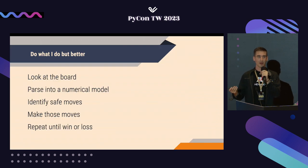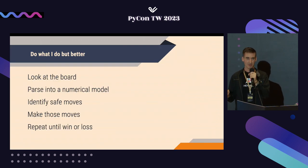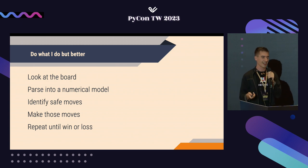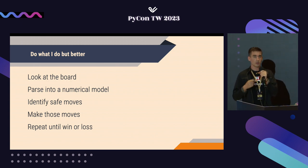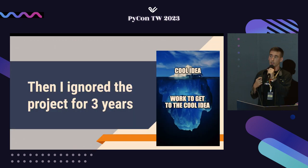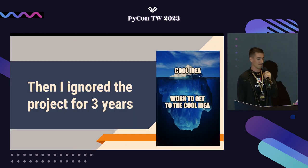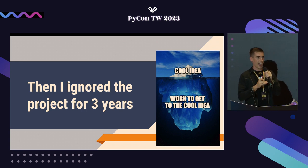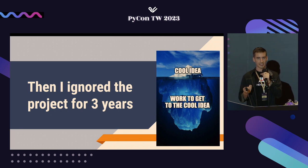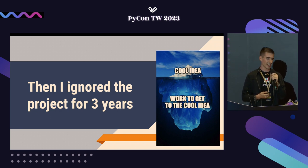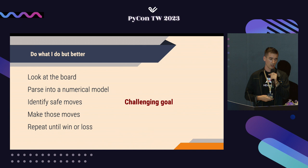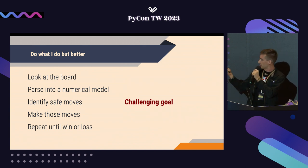I had a pretty good idea of what I wanted to do: basically, what I do, only better — use Python to look at the board, figure out a numerical model of it, find safe moves using the same strategies I use, click and repeat. So logically, I did the next thing and ignored the project for three years. I think this is fairly common with personal projects. There's some cool idea you want to execute, and then everything else required to get that cool idea done gets in the way. It's too intimidating. But I found a solution: start with a challenging goal and just make it simpler.